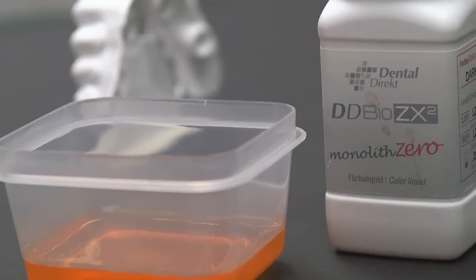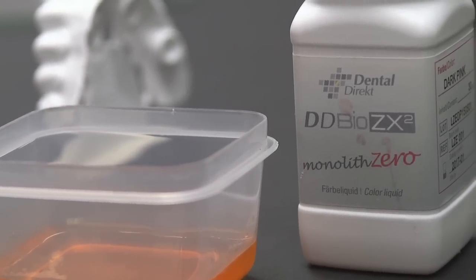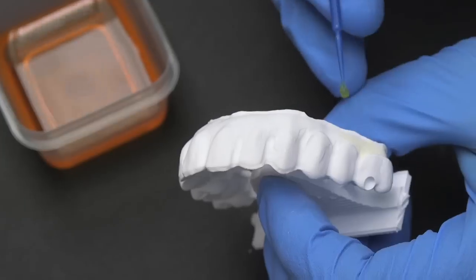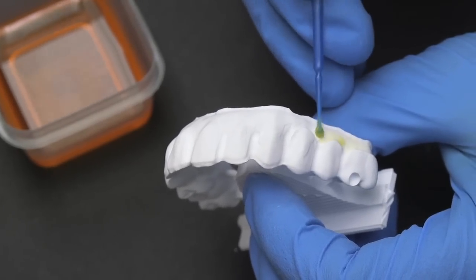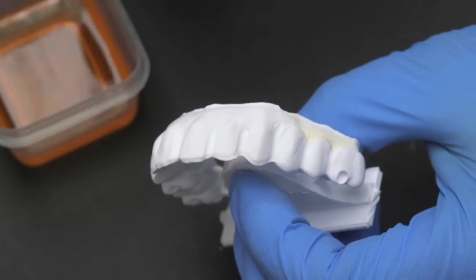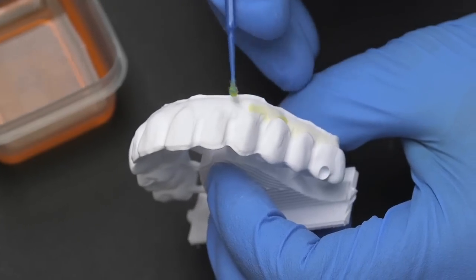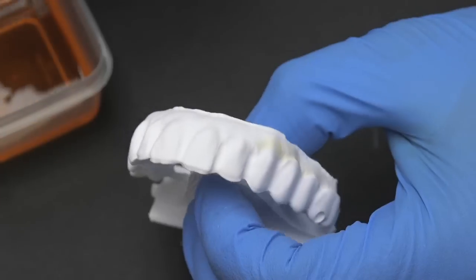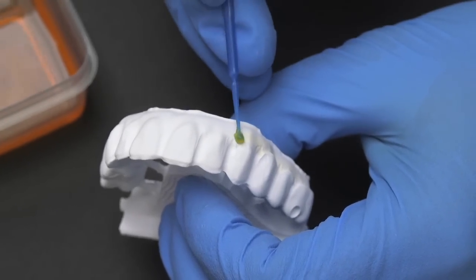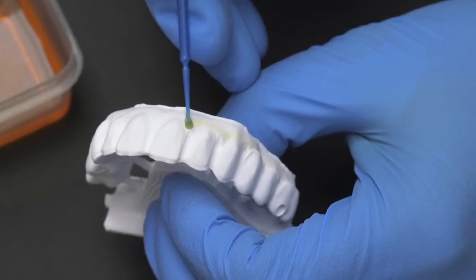Dental Direct also manufactures a tissue shade for full contour hybrid zirconia bridges. This liquid is applied to the tissue area of the bridge using a micro brush. We recommend a total of three applications for optimal absorption of the liquid.